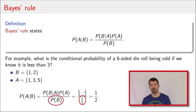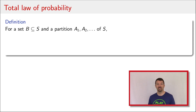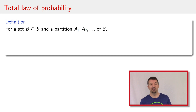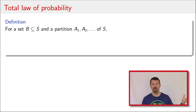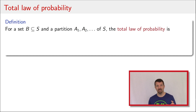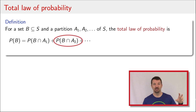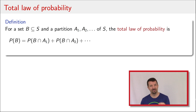Now, the denominator in Bayes' Rule — oftentimes we don't know what that probability is, and we'll have to find it in a more complicated way. In order to do that, we're going to make use of something called the total law of probability. The total law of probability starts with a set B that's a subset of our sample space S, and we have a partition A1, A2, and possibly countably infinite partition of that same sample space S. The total law tells us that the probability of B equals the probability of B and A1, plus the probability of B and A2, plus B and A3, and so forth for the entire partition.